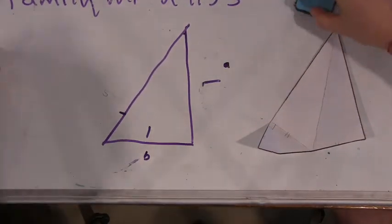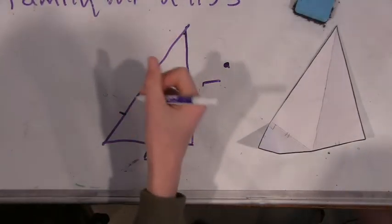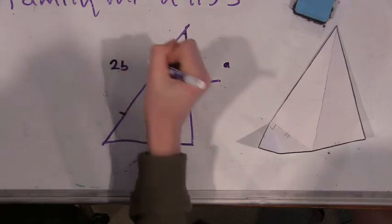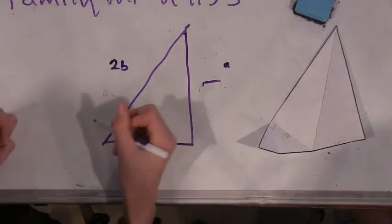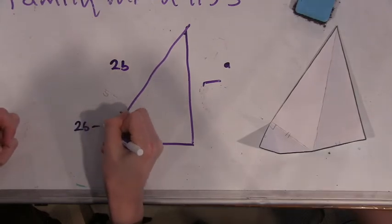So if you want to label these a, a, b, and then 2b as integers. This whole length is 2b. This would be 2b minus a. Yeah.